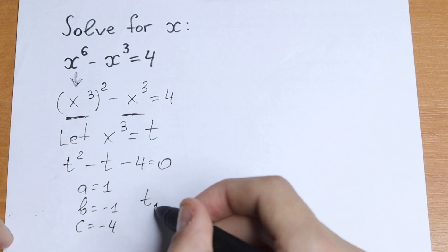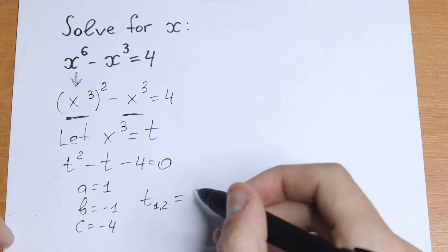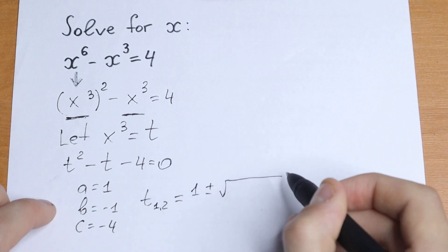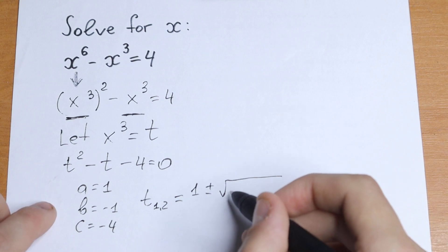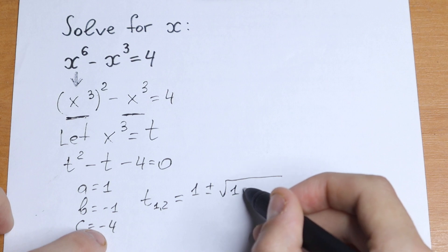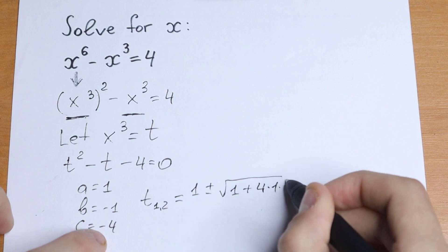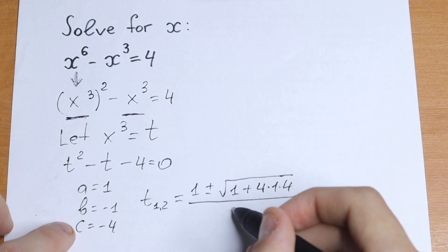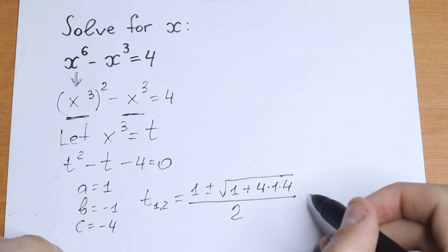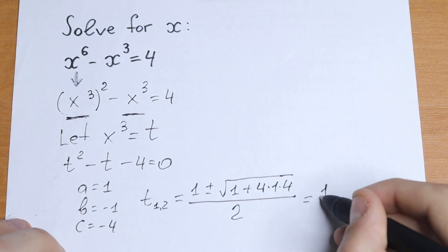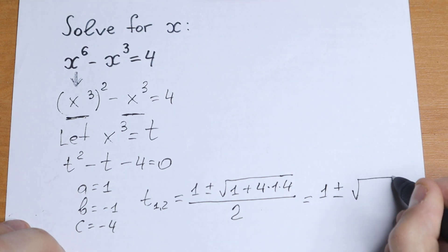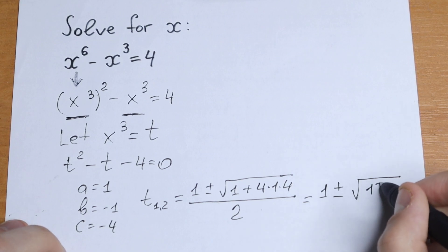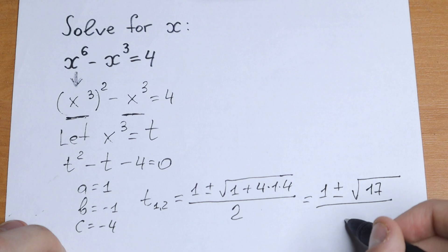Let's find t₁ and t₂. We will have t₁ and t₂ equal to minus b, which is 1, plus or minus the square root of b squared minus 4ac. That gives us 1 minus negative 4 times 1 times 4 inside the square root, all divided by 2a, which is 2.